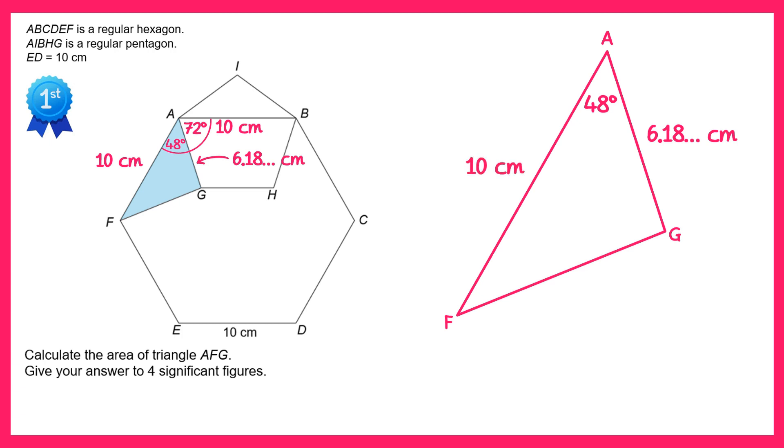We can find the area of this triangle using the formula half AB sine C. So the area is equal to one half times 10 times 6.18 times sine of 48 degrees. And if you type this into your calculator and then round to four significant figures like I've asked in the question, you'll get the answer 22.96 centimeters squared.